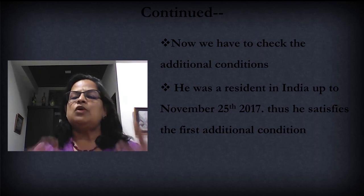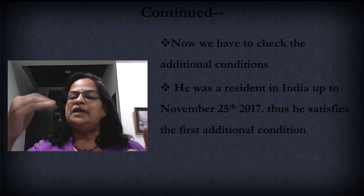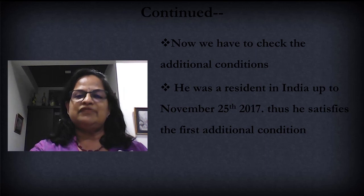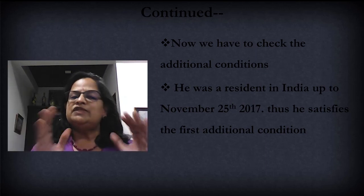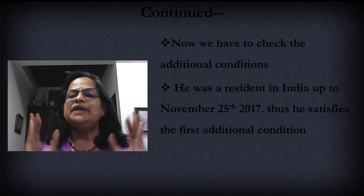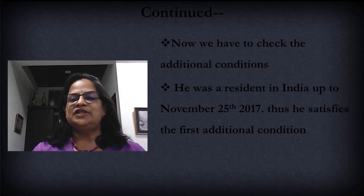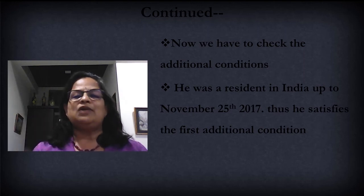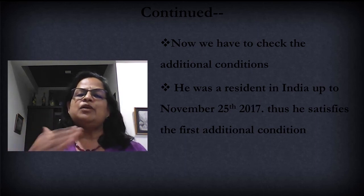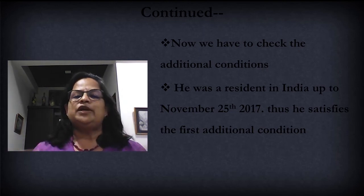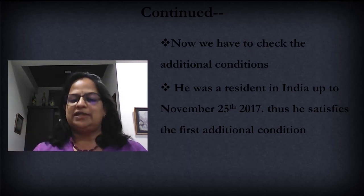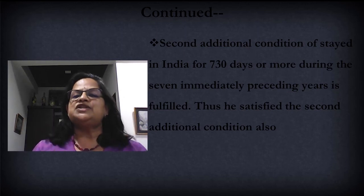You can directly write that he was a resident in two out of ten immediately preceding previous years. In the calculation, when we took four immediately preceding previous years, we found 365 days for two of those years — meaning he was a resident for both years. Therefore you don't have to calculate the full ten preceding previous years. When you are more thorough with the problems, you can see which steps you can avoid. So here I'm writing directly, saving time.